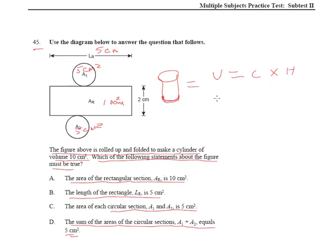Well, look at what we're given. The volume is 10, which is equal to C times its height. Its height is 2. How do I know? Well, look, the 2 is right there.